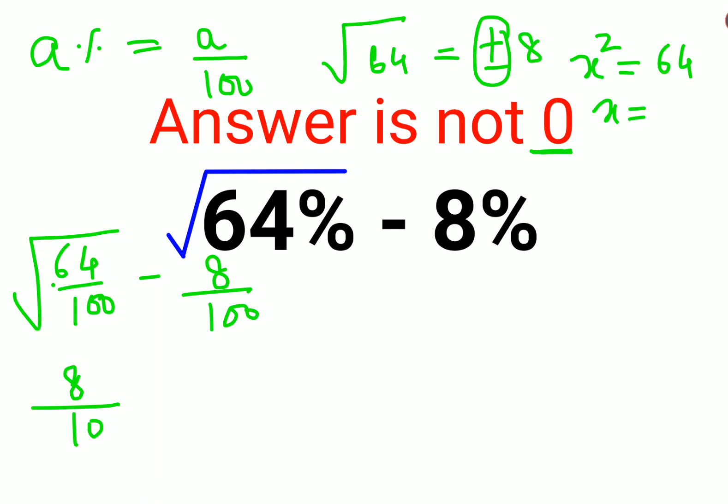So x will be equal to plus or minus 8, because if there is a variable, the variable has the power to change its value. But if you are taking the root of a positive number, then the answer will always be just a positive answer.